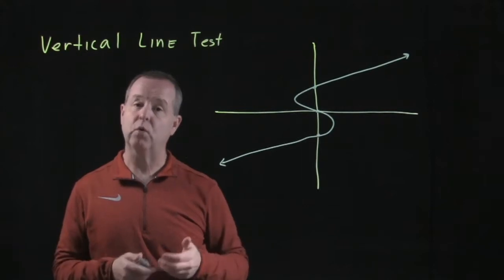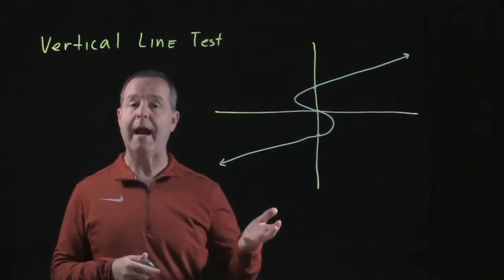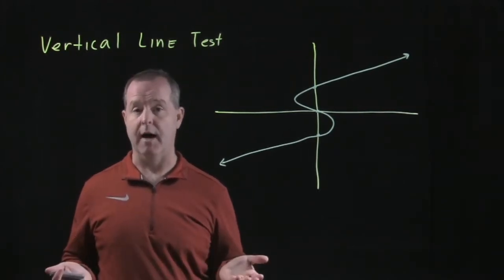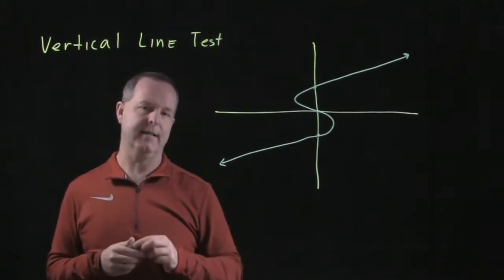Now, we can also inspect graphically or visually if a graph is a function or not. And the tool that we use is called the vertical line test.